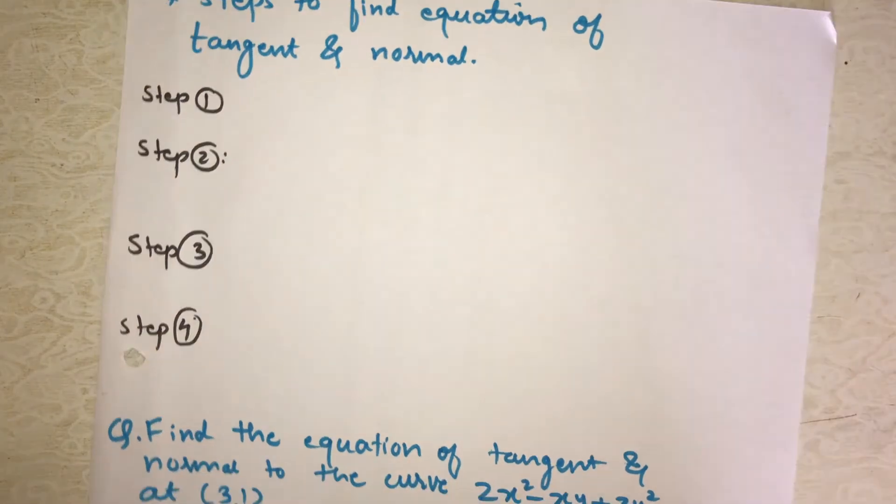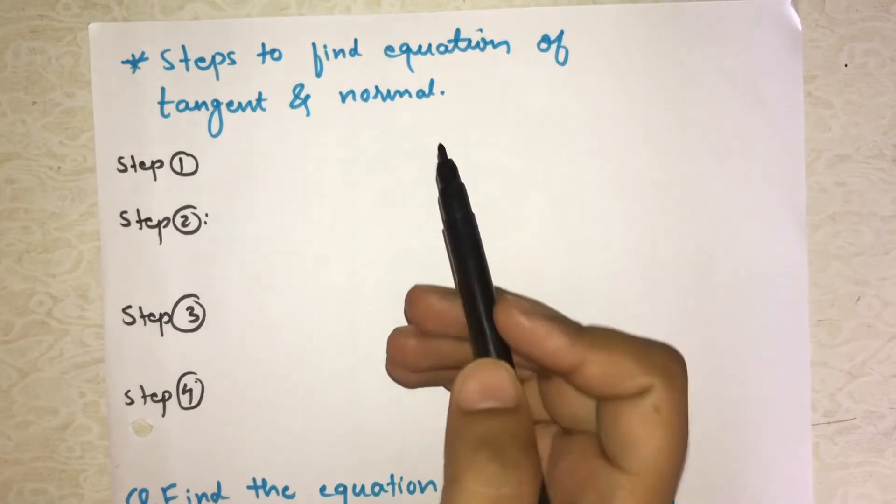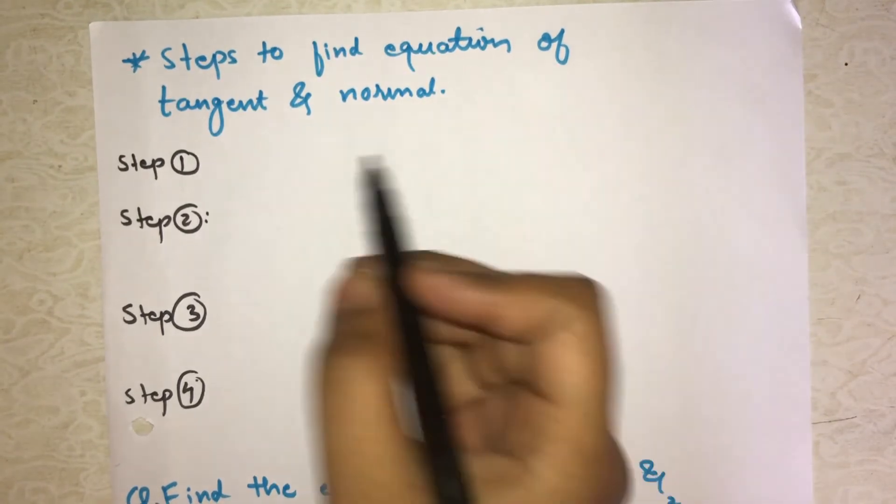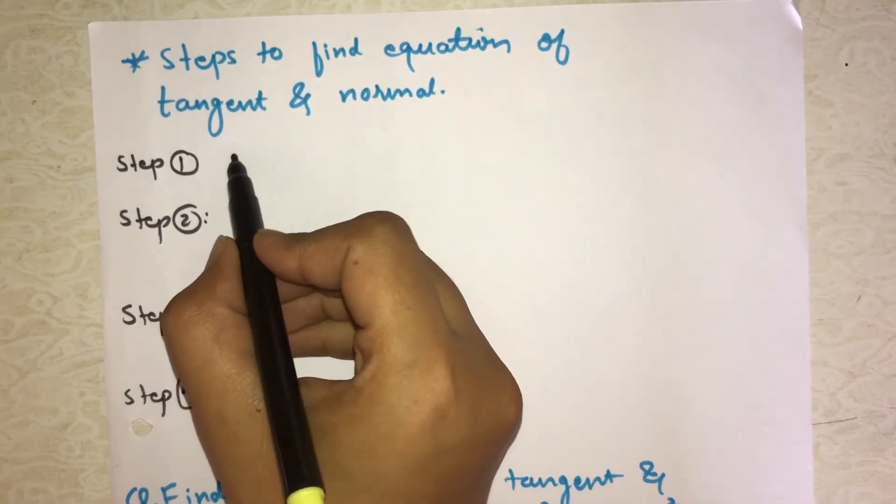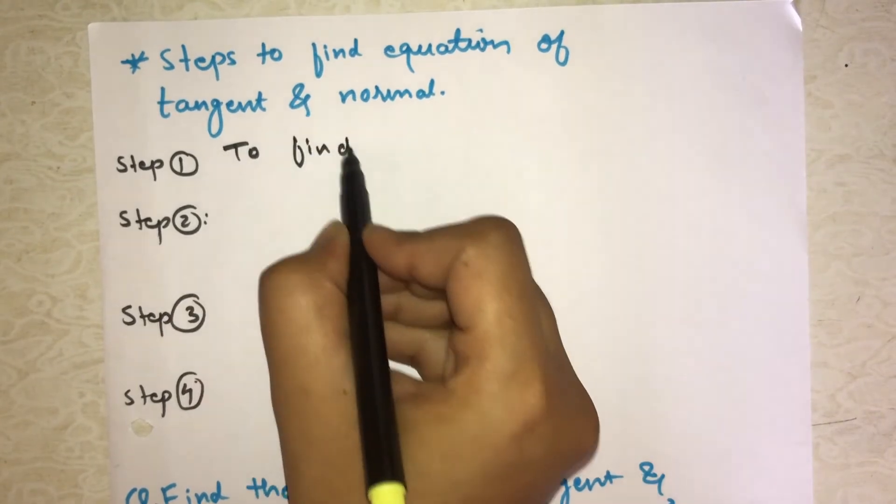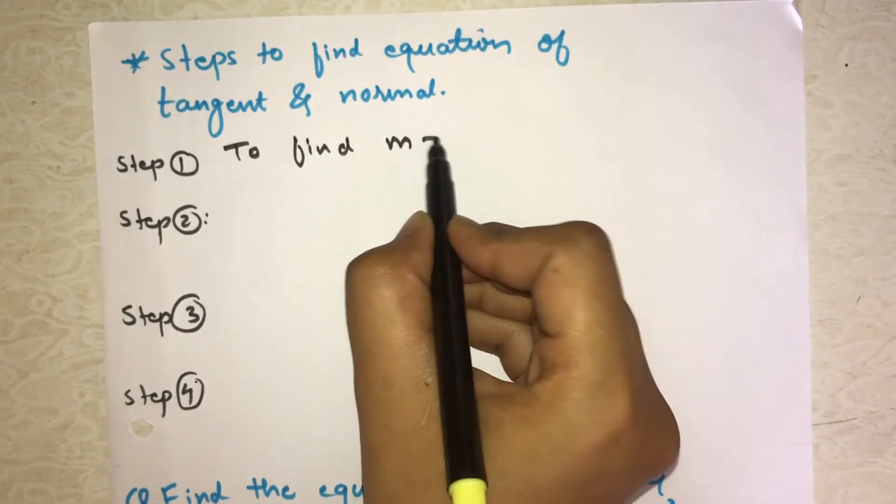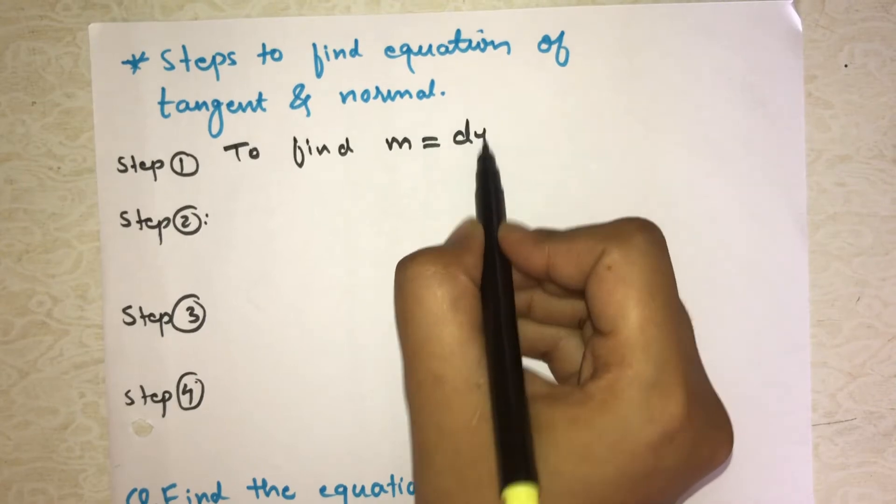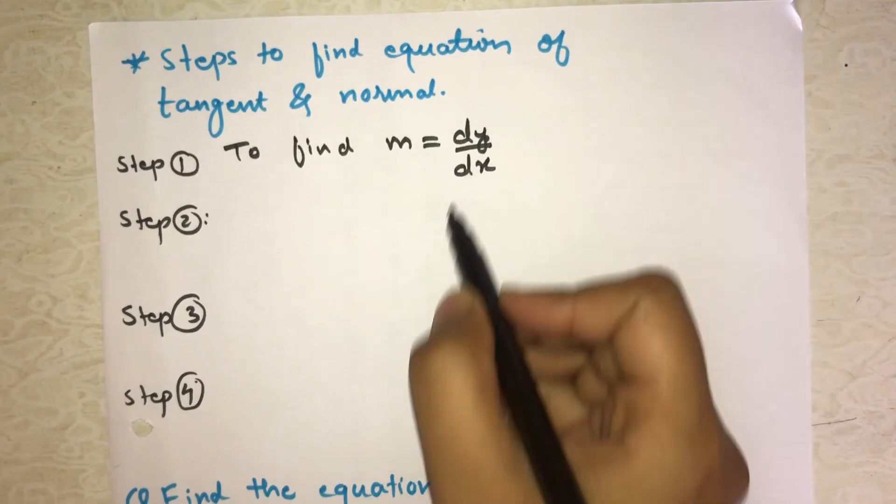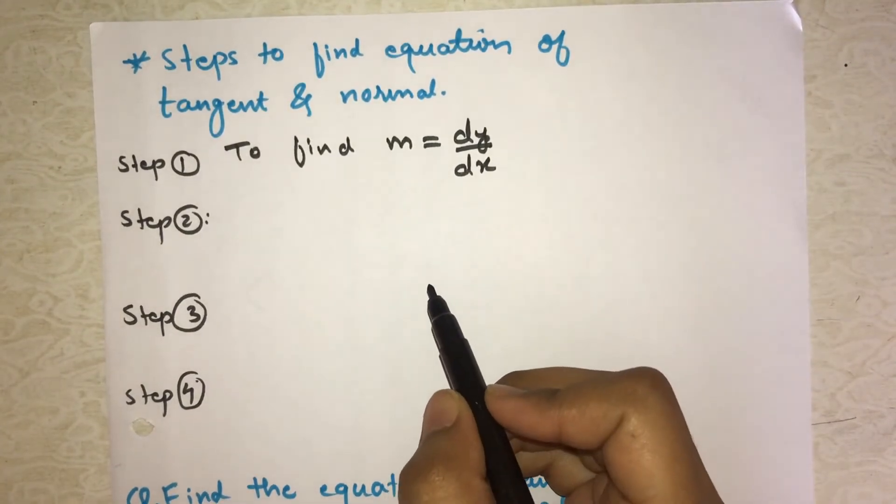So first, step one: using the given curve, we will find the slope, which means to find m, where m equals dy/dx. This means we have to take the derivative of the given curve.